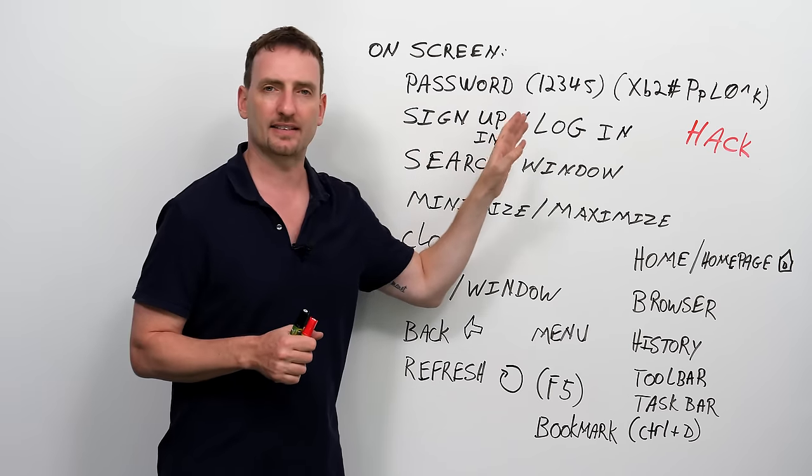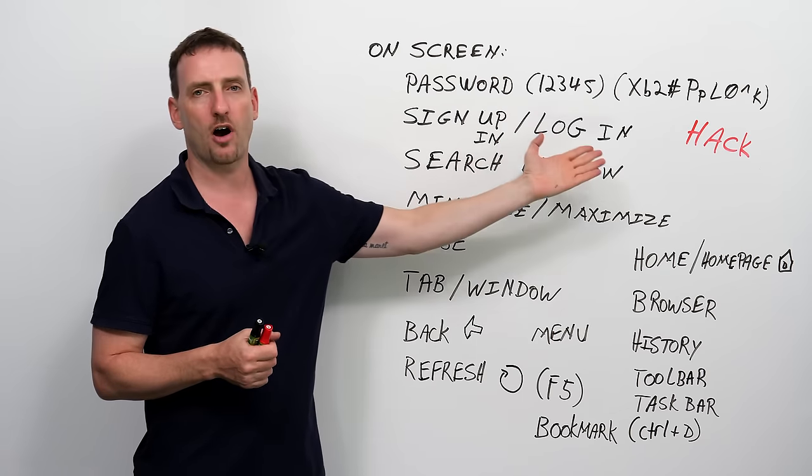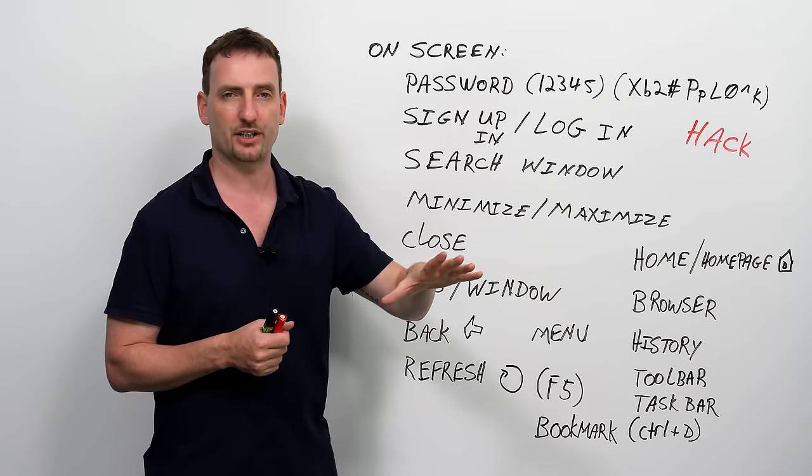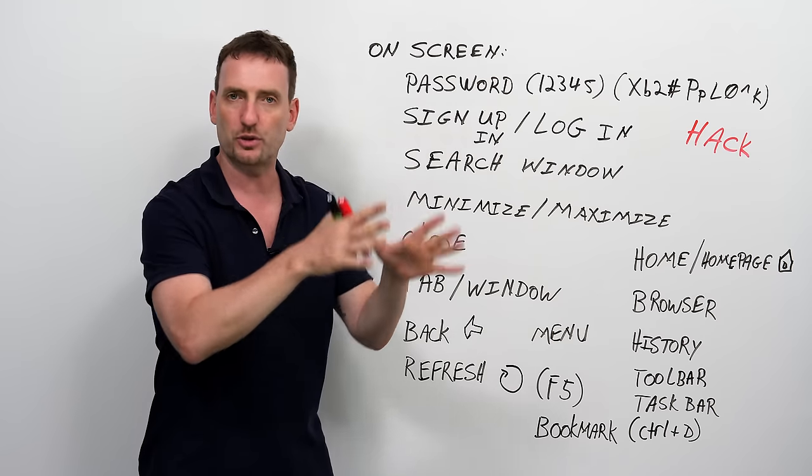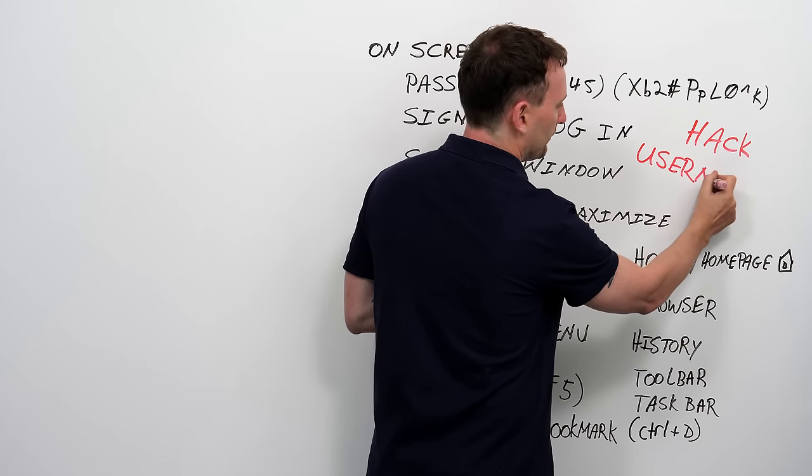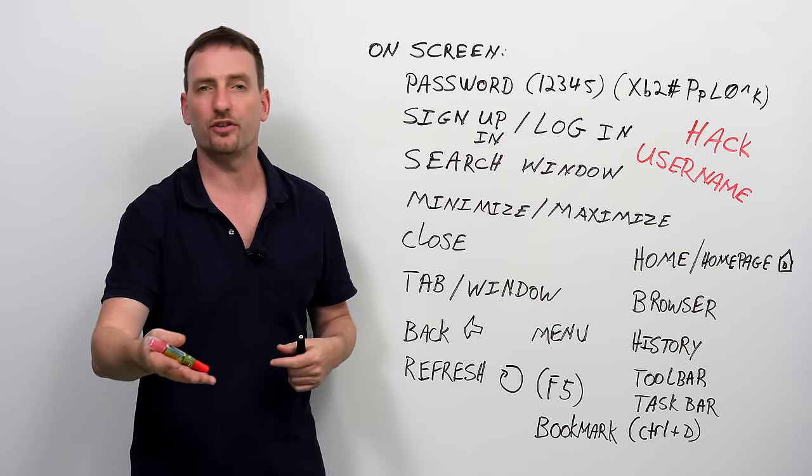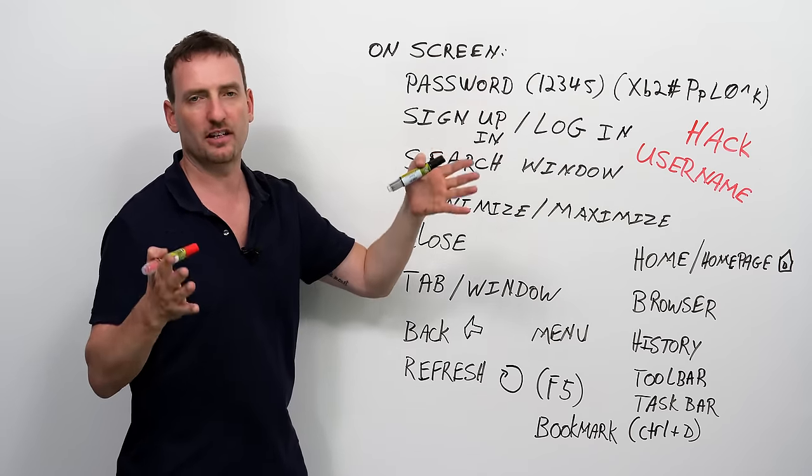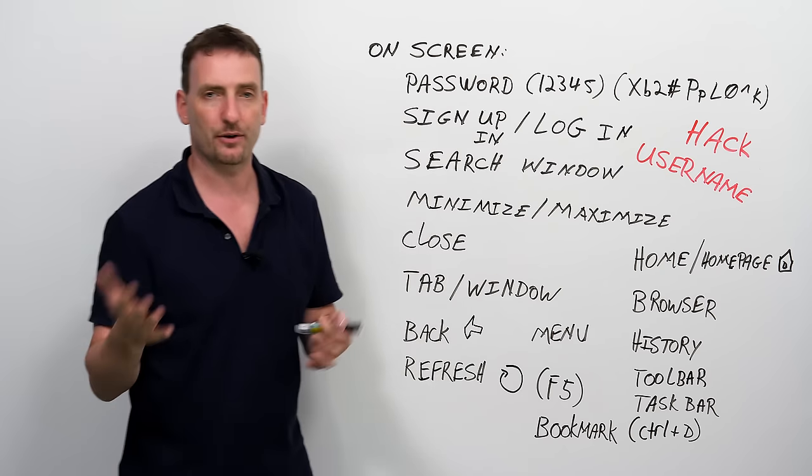Next, you'll go to a lot of sites or a lot of programs. And you'll see at the top, you'll see options. Sign up or log in. Sign up means that you don't have an account or you don't have a membership with this particular application. So, you can make one. You can create an account. Log in means you're already a member. You already have your username and you already have your password. Your username is your identity. This is who you are and you're going to put your username and you're going to put your password and you're going to get into your account.